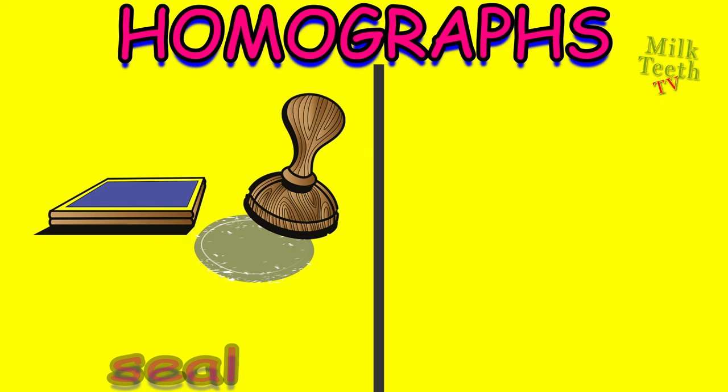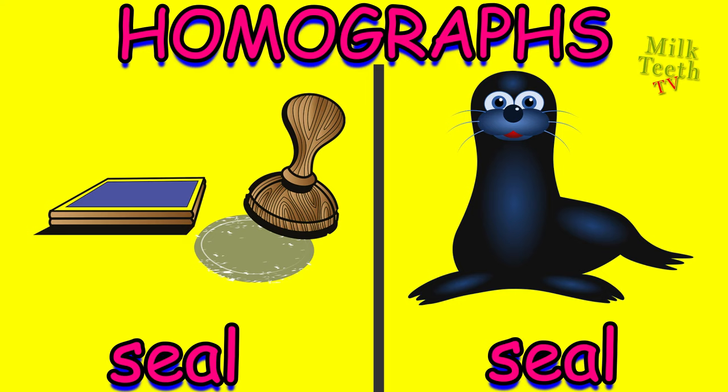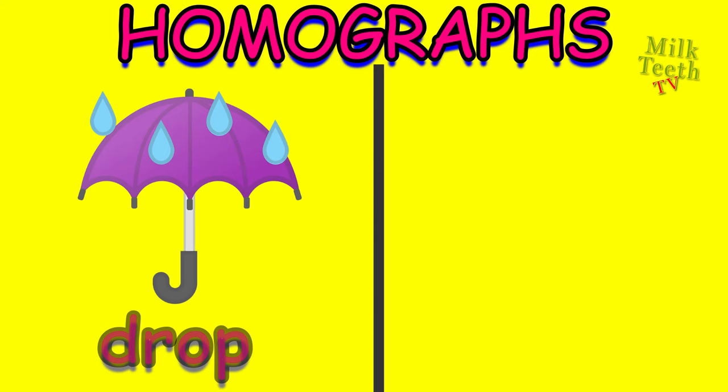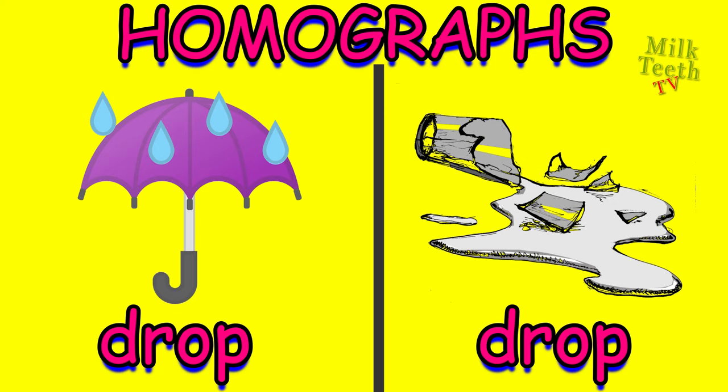Seal — it is a stamp. And seal — it is an aquatic animal. Drop — the drops of water, or a raindrop. And drop — to drop something, to make it fall down.